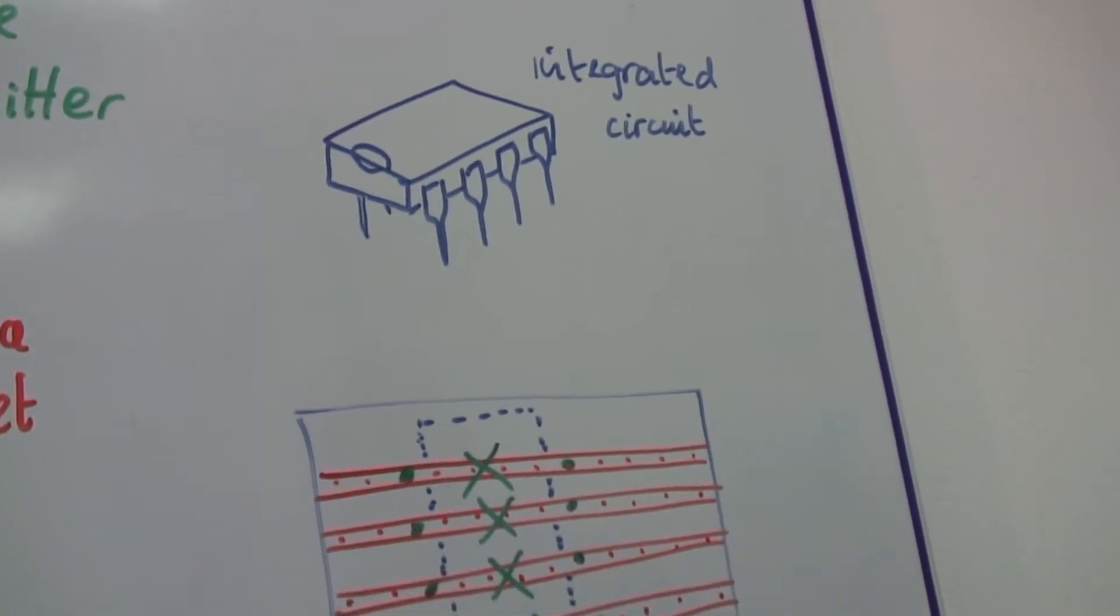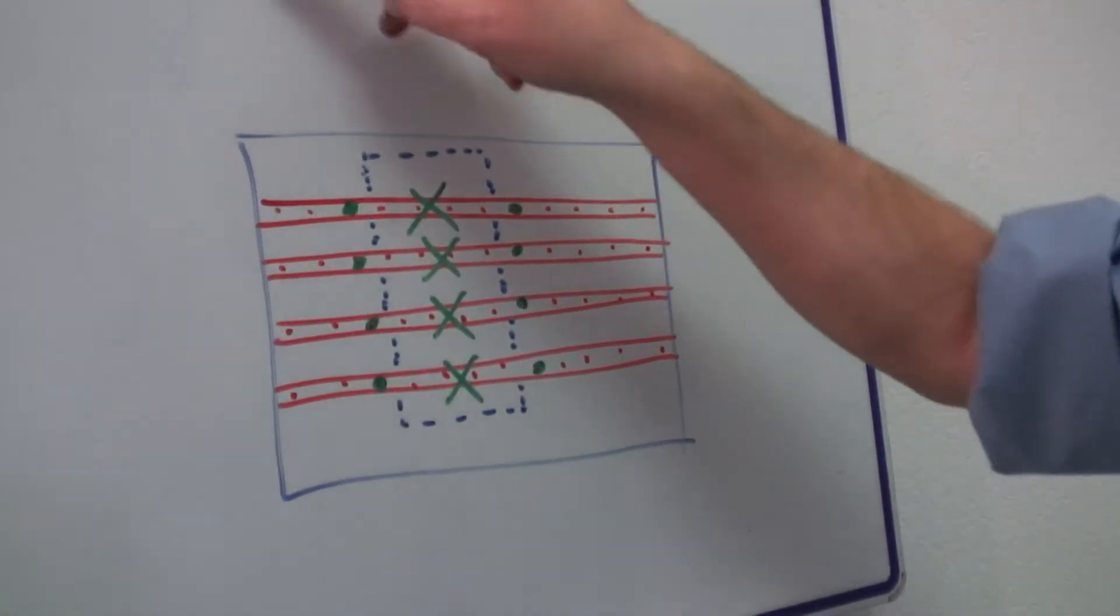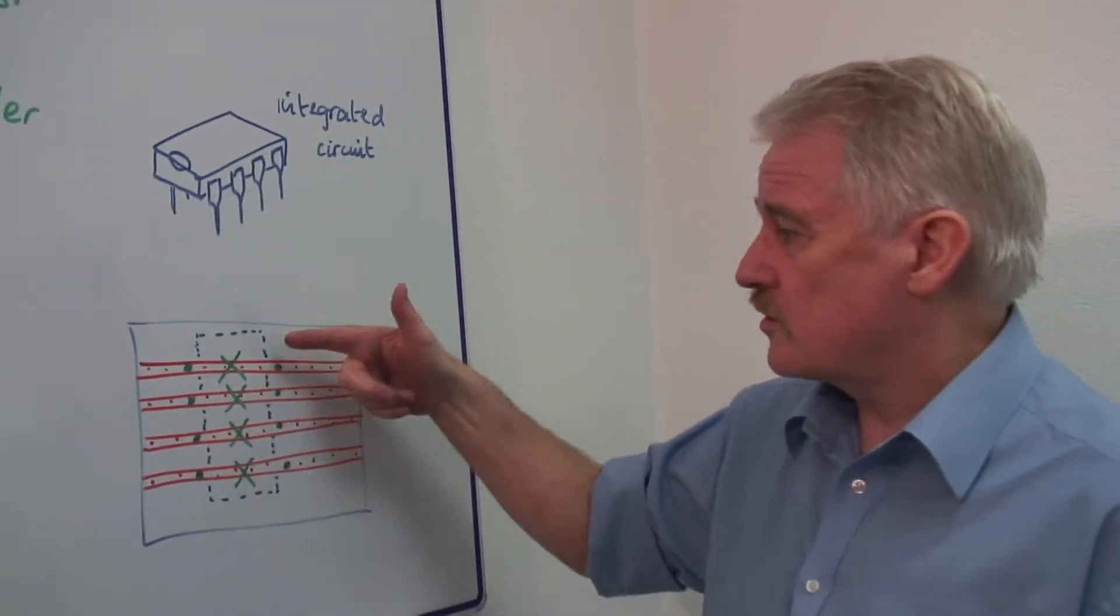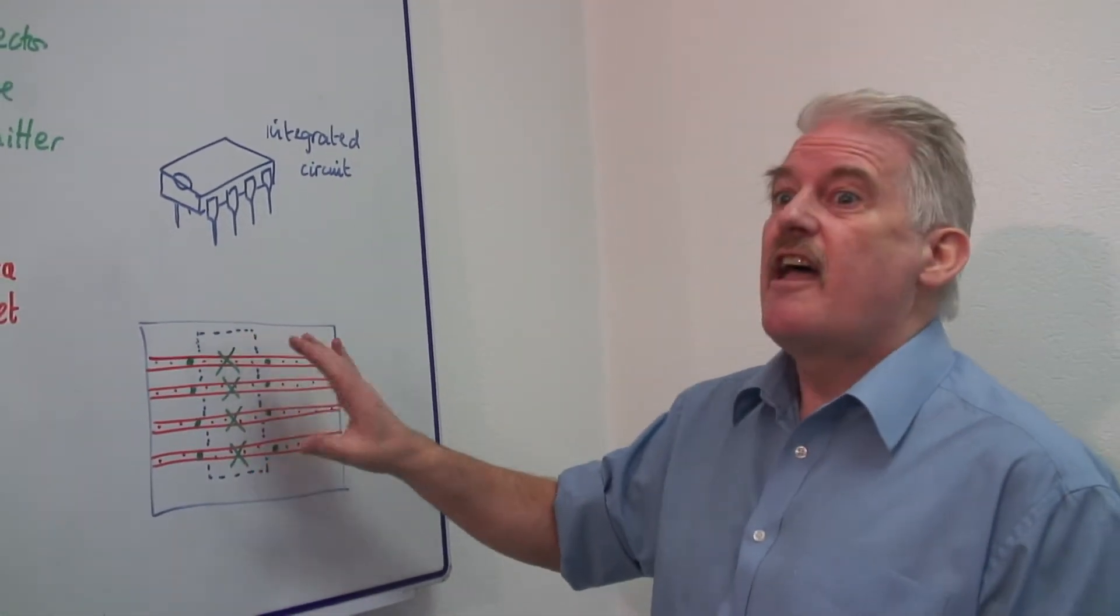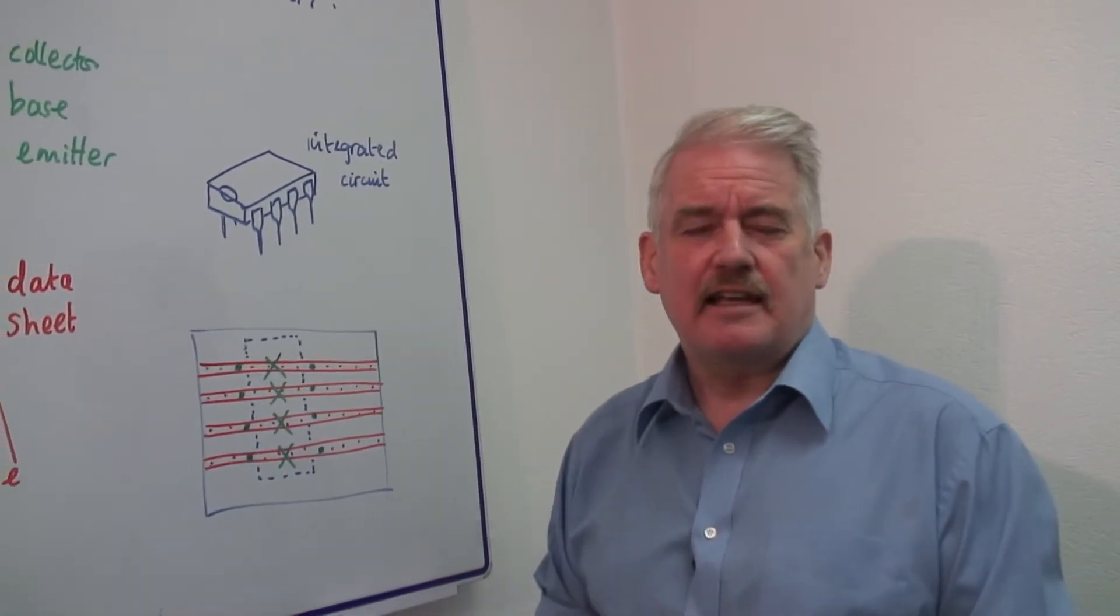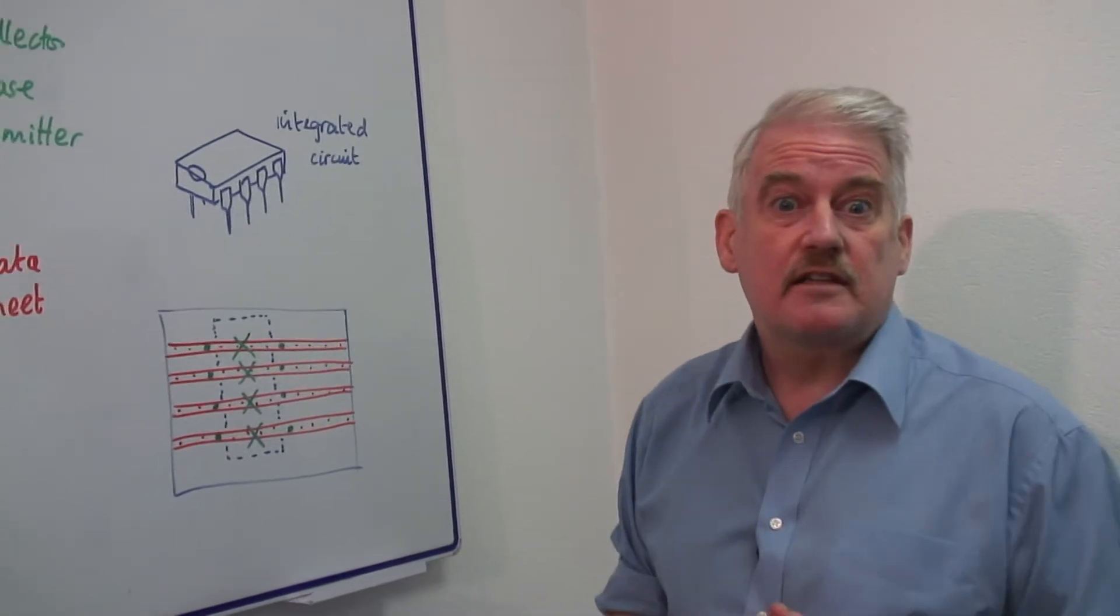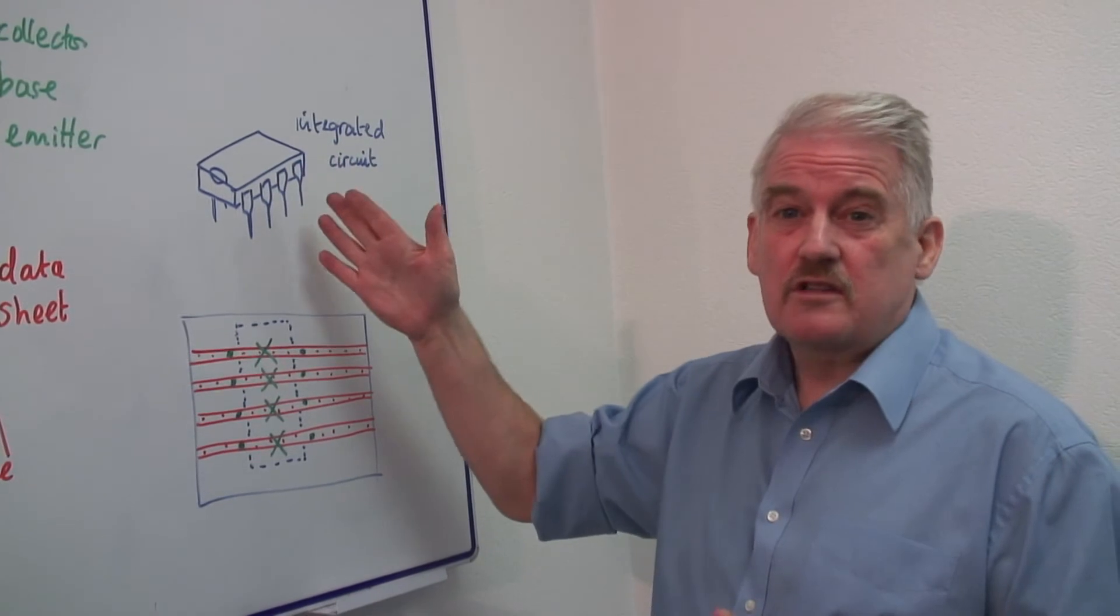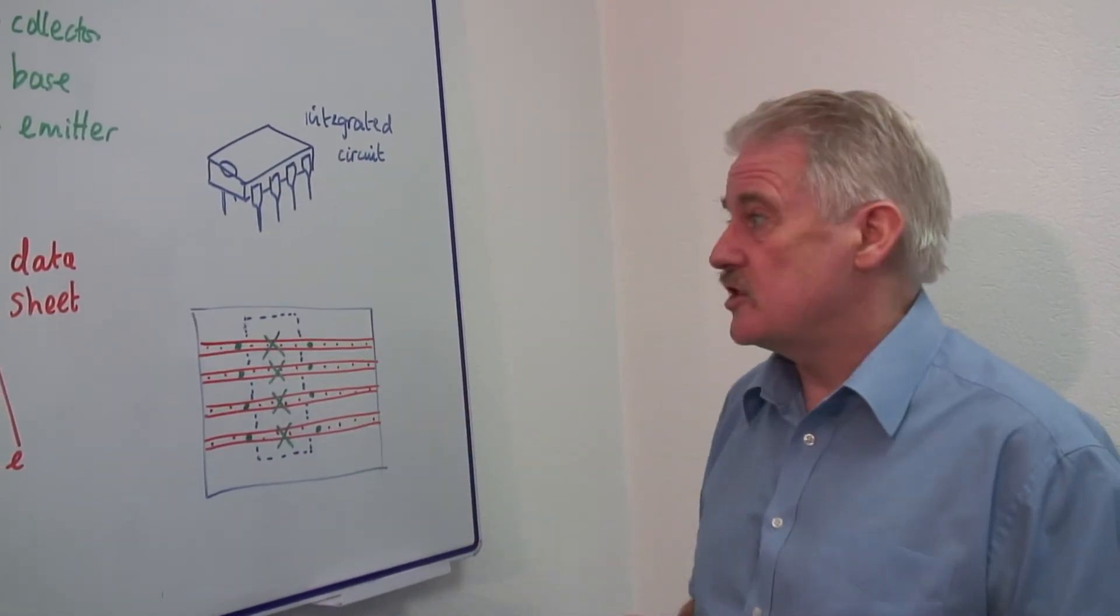They can then be soldered there. If we use integrated circuits, more often we use a holder and we solder the holder in first and then plug in the integrated circuit. This is in case the integrated circuit fails for some reason or to avoid getting it hot because getting it hot damages it.